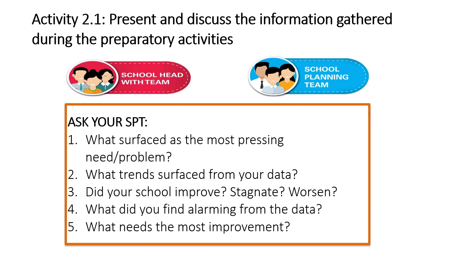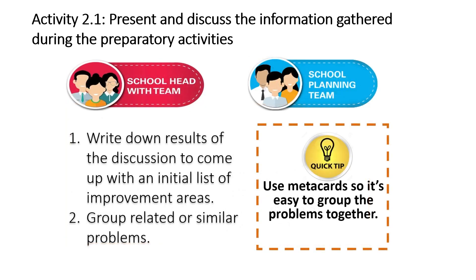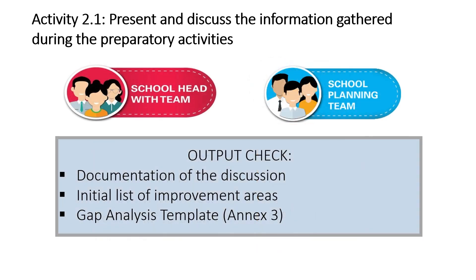After doing that, we can proceed to activity 2.1. We present and discuss the information gathered during the preparatory activity. You may ask the following questions: What surface has the most pressing need or problem? What trends surface from your data — did your school improve, stagnate, or worsen? What did your school find alarming from the data, and what needs the most improvement? It's really a form of reflection as to how you're going to improve yourselves and the school. Write down the results of the discussion to come up with an initial list of improvement areas, and you can have a working list of priority improvement areas. Group related or similar problems to identify which one is really very important. Make sure you document the discussion. You have an initial list of improvement areas and you have the gap analysis template.